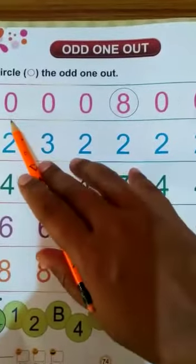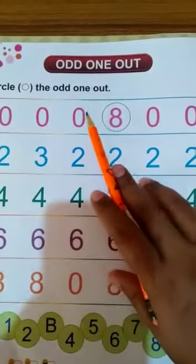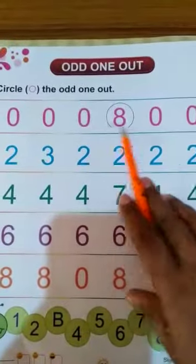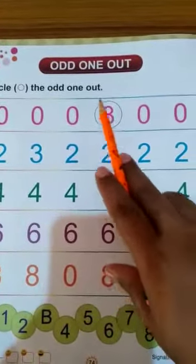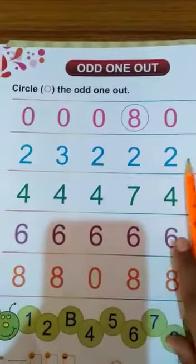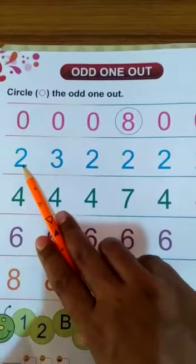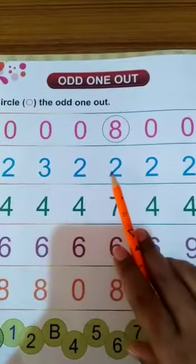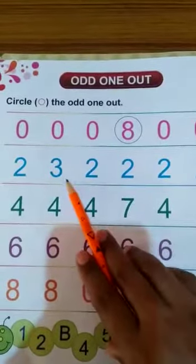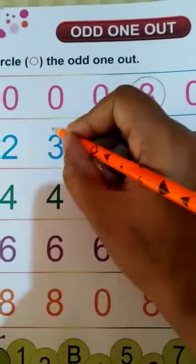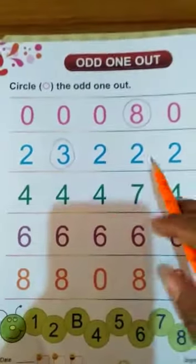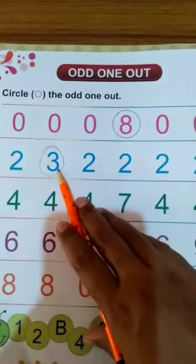You can see here 0, 0, 0, then 8, 0, 0. That means the 8 number is odd number. It is not matching. Now you can see here second line: 2, 3, 2, 2, 2, 2. That means 3 is the odd number. 3 is the odd number, it is looking different. This number is more. 3 number.